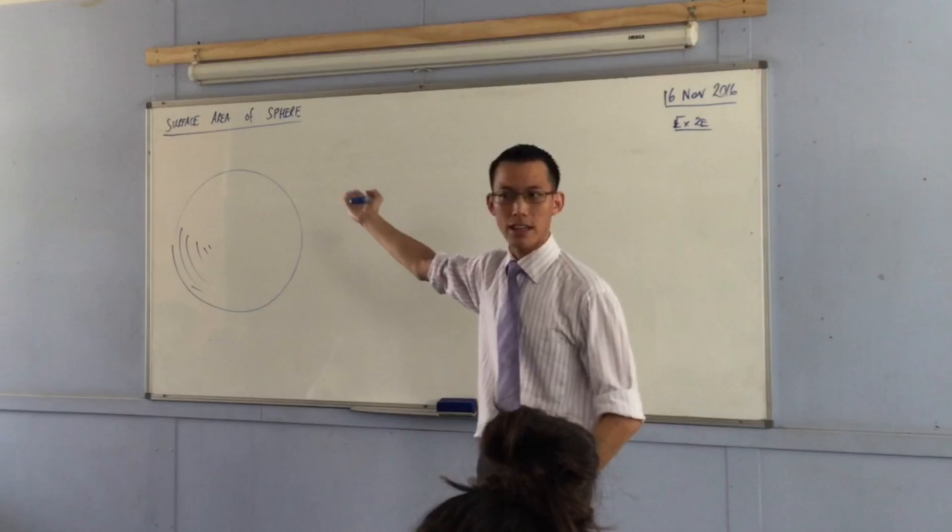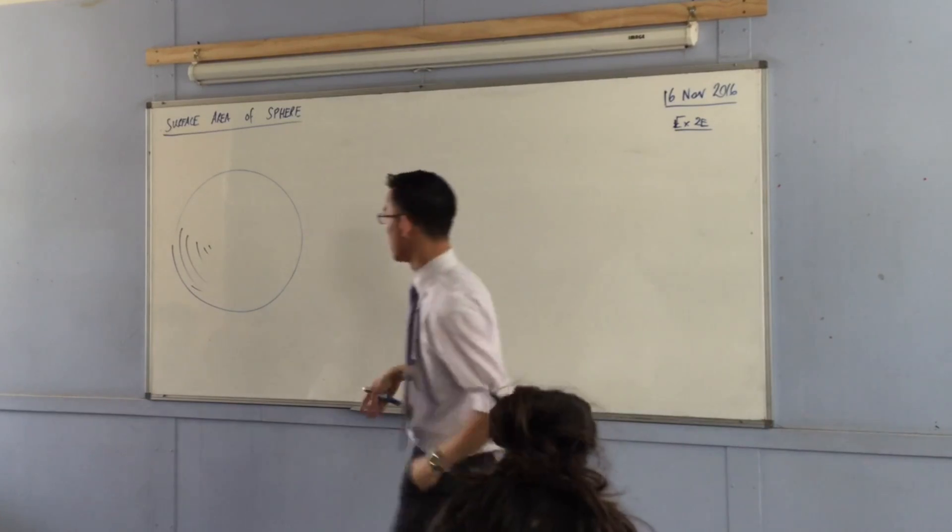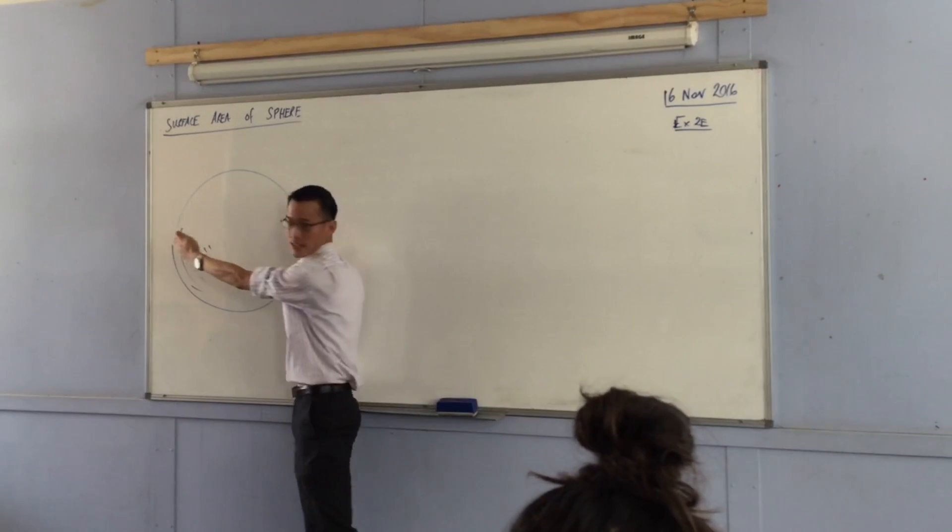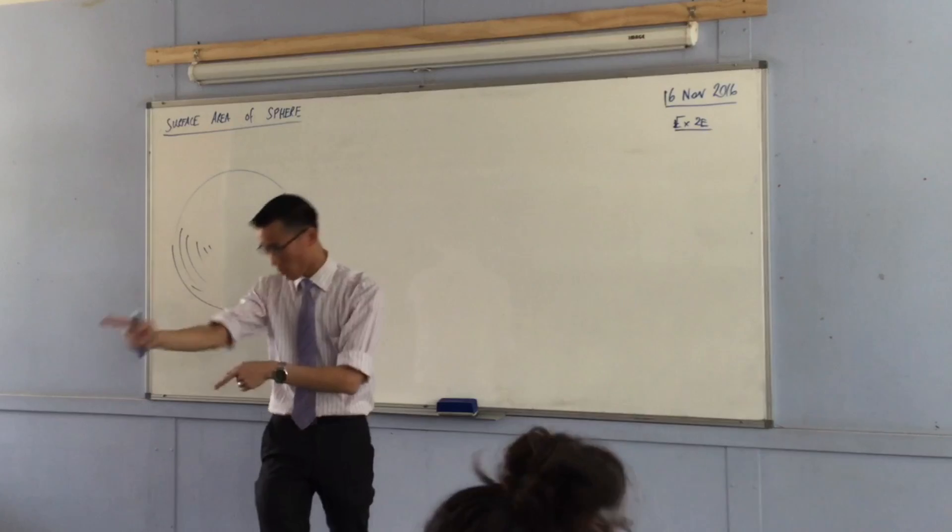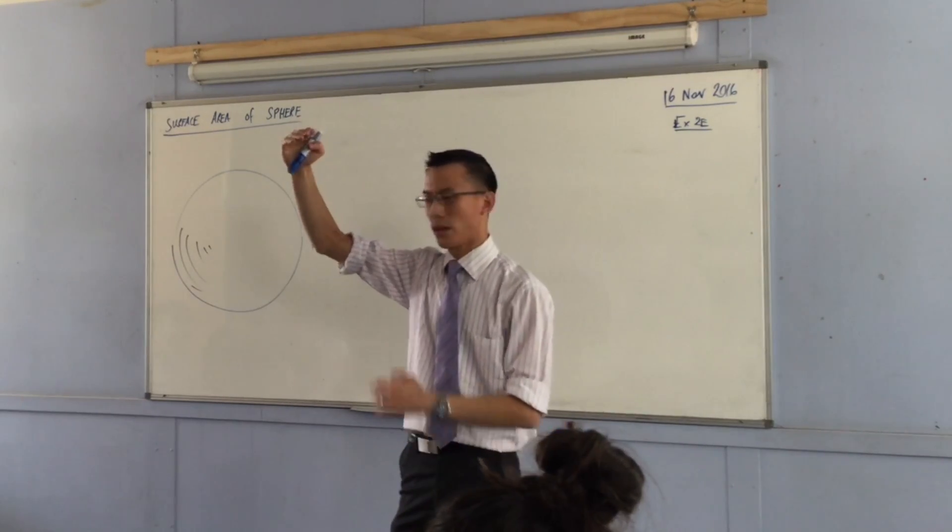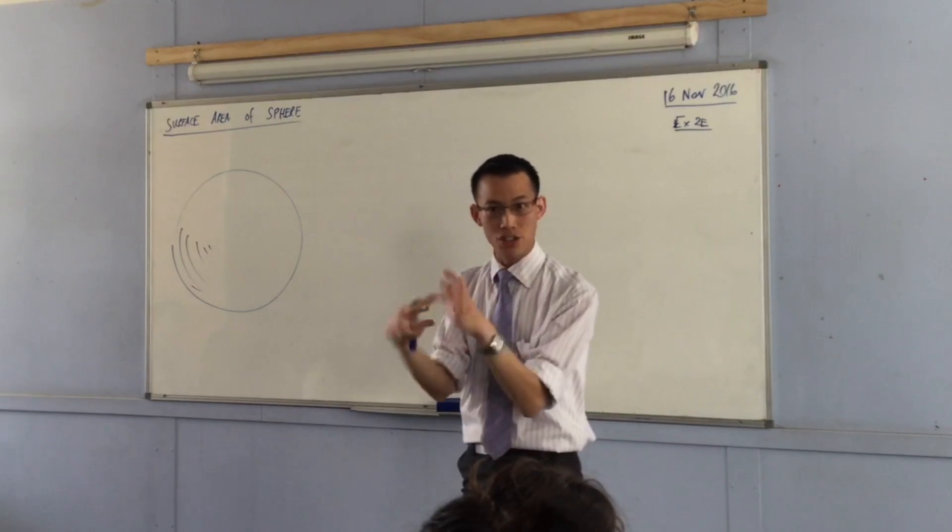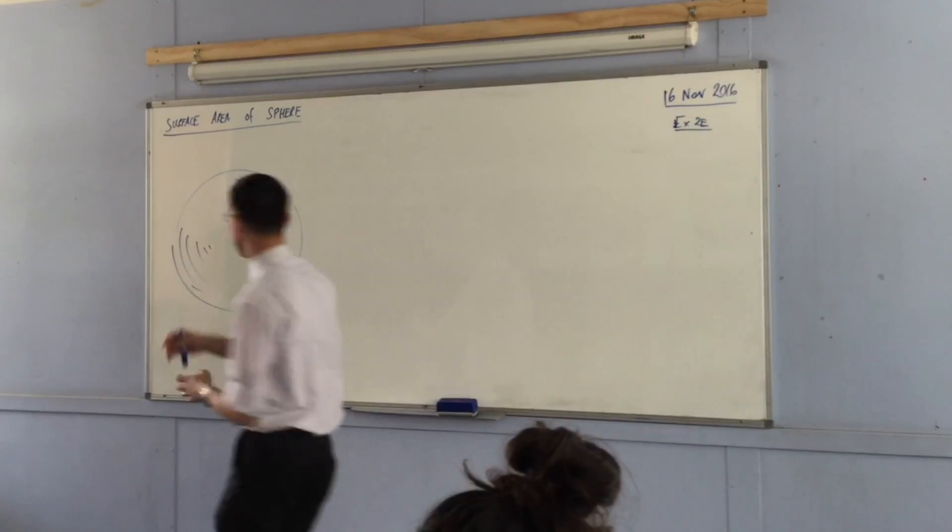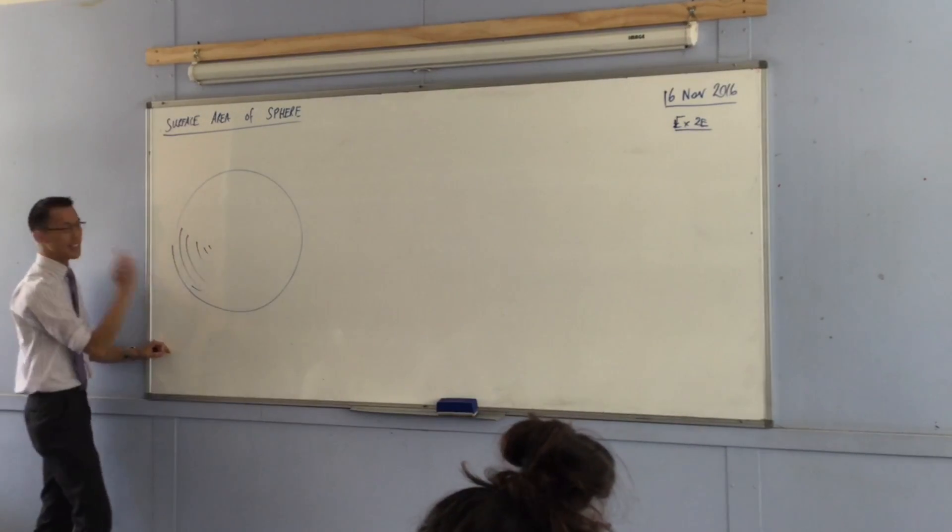But when you have a look at a sphere, what measurement tells us how wide it is? It's the radius, right? But when you think about how tall it is, that's the same. That's the whole idea of a sphere - no matter which way you turn it, it's going to be the same.